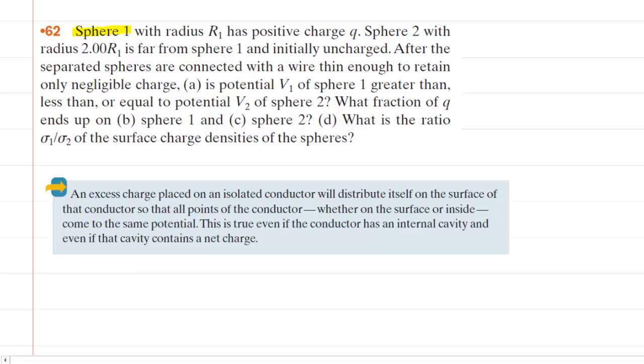In this question, we have two spheres, sphere one and sphere two, connected with a wire thin enough to retain only negligible charge. Because they are connected by a wire, we can treat the spheres as a single conductor. We know that when an excess of charge is placed on such a conductor, the charge will distribute itself on the surface so that all points of the conductor come to the same potential.